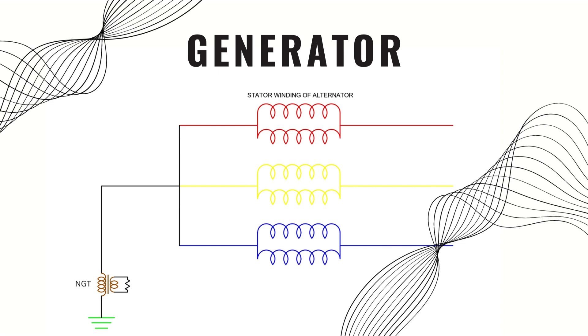Now my question is, why is neutral grounded through NGT? If you know, please answer in the comment.